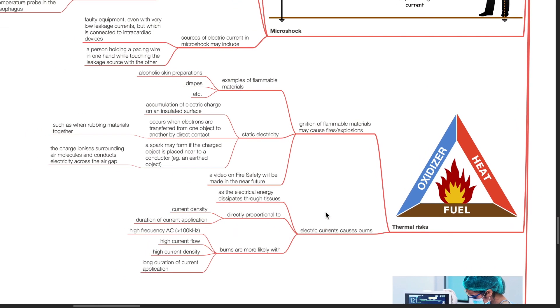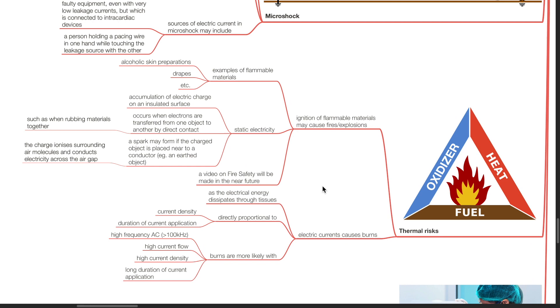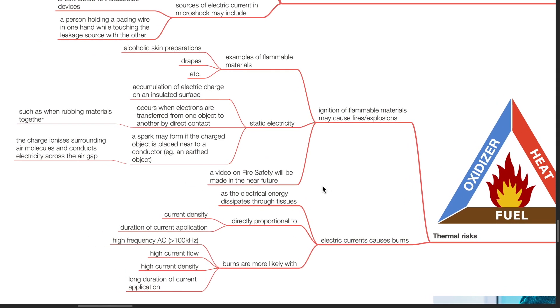Thermal risk. Ignition of flammable materials may cause fires or explosions. Examples of flammable materials include alcoholic skin preparations and drapes. Static electricity refers to accumulation of electric charge on an insulated surface and occurs when electrons are transferred from one object to another by direct contact, such as when rubbing materials together. A spark may form if the charged object is placed near to a conductor, such as an earth object. The charge ionizes surrounding air molecules and conducts electricity across the air gap.